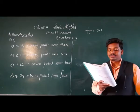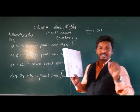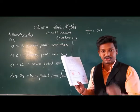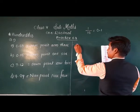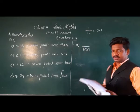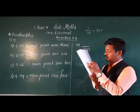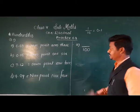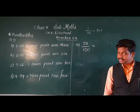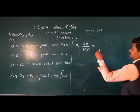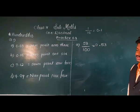Question 2: Write the decimal for the shaded part in each figure. Two grids are given, each divided into 100 small squares. First, count the shaded squares — each column has 10 squares. Five complete columns are shaded: 5 times 10 is 50, plus 3 more is 53. So the fraction is 53 upon 100, and the decimal is 0.53.